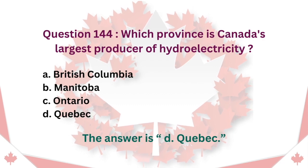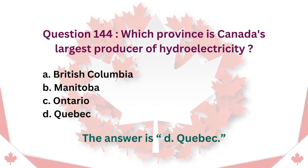Question 144: Which province is Canada's largest producer of hydroelectricity? A. British Columbia. B. Manitoba. C. Ontario. D. Quebec. The answer is D. Quebec.